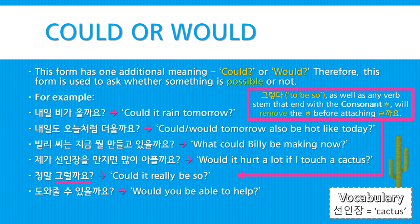Note that the verb 그렇다 — to be so — as well as any verb stem that ends with the consonant ㅎ, will remove the ㅎ before attaching ㄹ, followed by 까요. 도와줄 수 있을까요? — Would you be able to help?